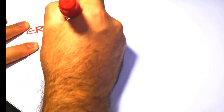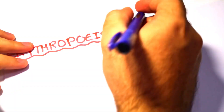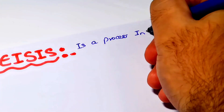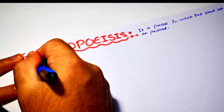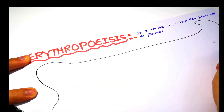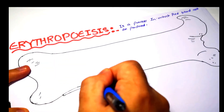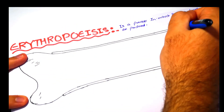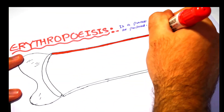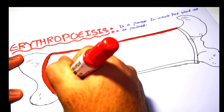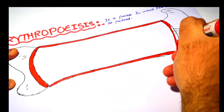In this video, we will talk about the process of erythropoiesis. Erythropoiesis is the process in which red blood cells are produced. Red blood cells are produced from red bone marrow in adult people, while in the fetus they are produced from the yolk sac, spleen, and liver. This is an example of a long bone in which we will draw the red bone marrow and look at how red blood cells are produced and what the different stages of differentiation are.